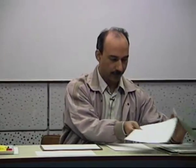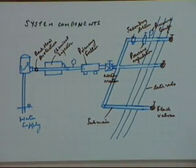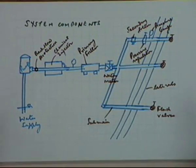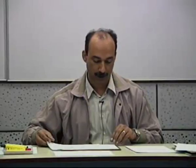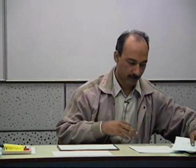Yesterday we had started with the drip irrigation system. We had looked into the general layout which we might have as far as the main system components are concerned. There can be a variation in terms of the laterals and how the laterals are laid — that we will see subsequently. But in general, the other components which are usually present in a drip irrigation system have already been discussed.